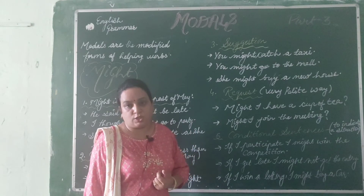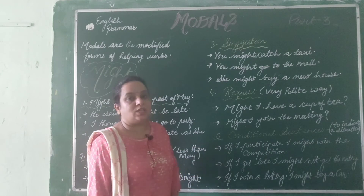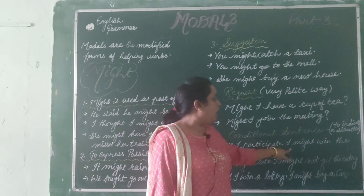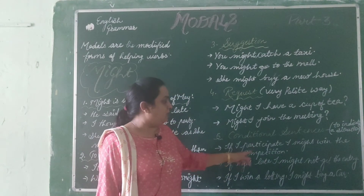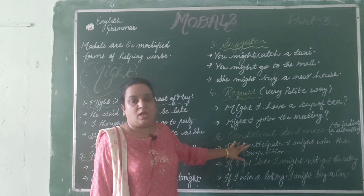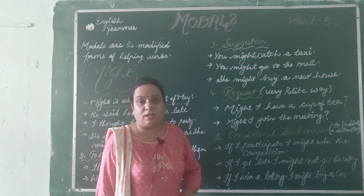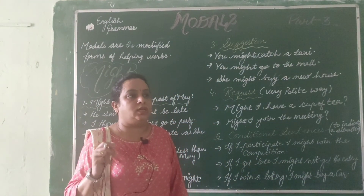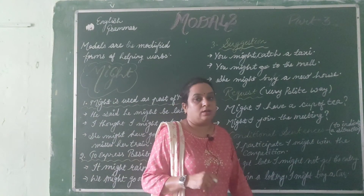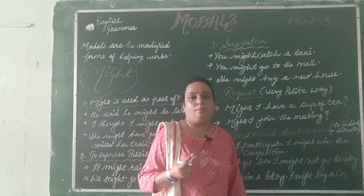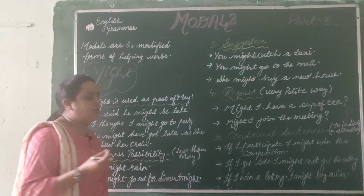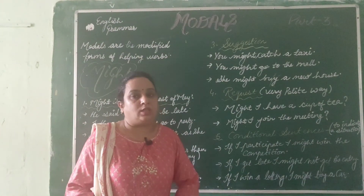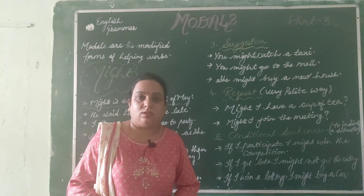The fifth use of might is in conditional sentences — to indicate a situation. For example, 'If I participate, I might win the competition.' 'If I get late, I might not get the entry.' 'If I win a lottery, I might buy a car.' So might is used in conditional sentences to indicate uncertain outcomes. Note down these rules and learn for examination. We will meet in the next video with the next modals. Thank you very much.